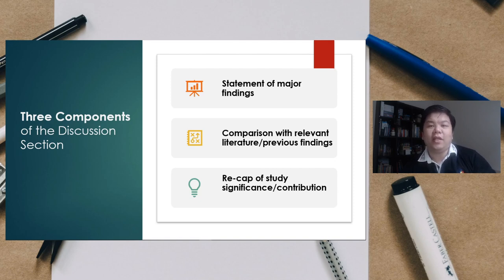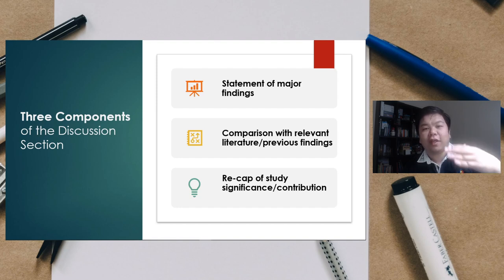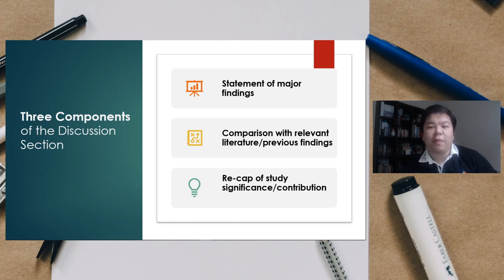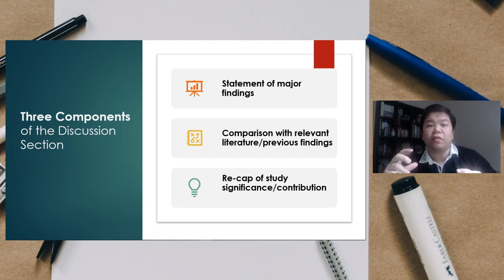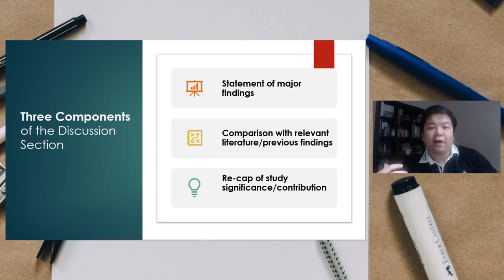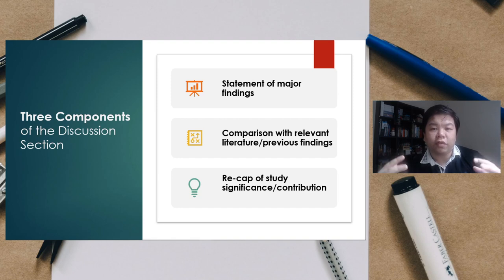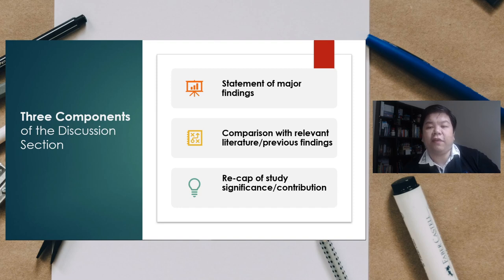So how to write the discussion section? It's easy — you just have to split it into three parts. Number one is the statement of major findings: you write a statement of what you have found out in the previous section. Then you do some comparison with relevant literature or previous findings from other papers or other research, hopefully recent ones. When you do this comparison, you report what was done before and what you found out, and what the relationship is in terms of similarities and differences.